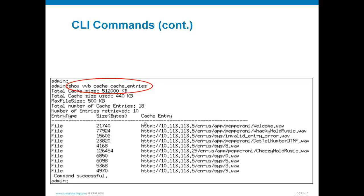To prove this really is your Voice XML Gateway-type device: the show VVB cache cache entries command takes the place of the historical show http client cache on the Voice XML Gateway, where you can see which wave files have been fetched and cached. You can set cache size with some commands, though clearing individual cache entries isn't obvious yet. For example, you can see wave files cached from micro apps — a welcome message, hold music, and digit collection prompts.